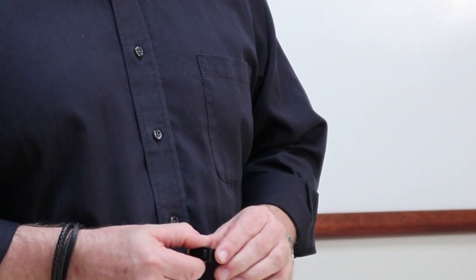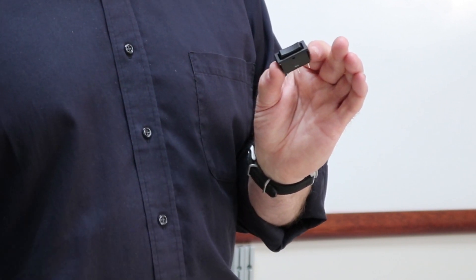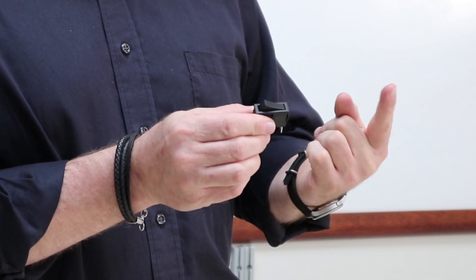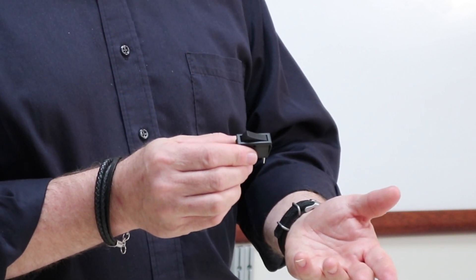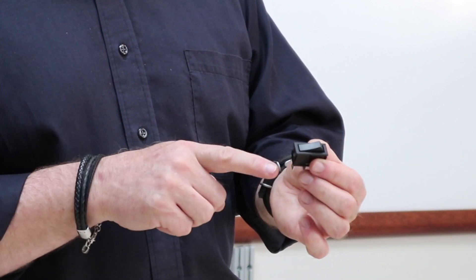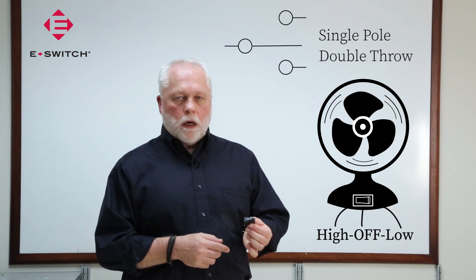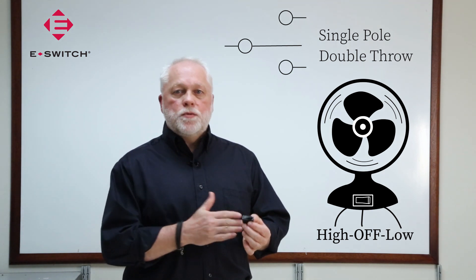Using the same fan analogy, let's now assume this fan has a high speed and a low speed. To illustrate that, I'm going to look at this three-position rocker. In the center position, the fan is off. As I actuate the switch to the far left, I close one circuit that goes from the wall outlet to the fan motor, putting the fan in low speed. If I actuate the switch to the far right, it closes one unique circuit in the switch and puts the fan in high mode. This rocker is considered a single pole, but it is a double throw, because I have the low speed and the high speed positions.